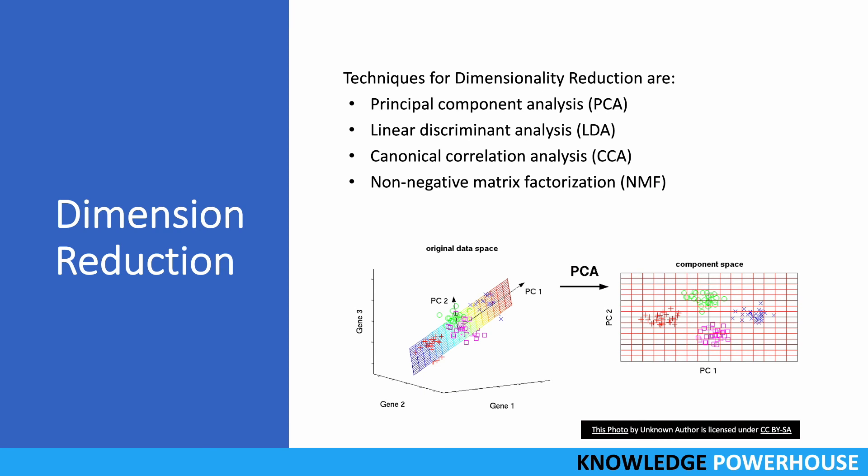There are several techniques for performing dimensionality reduction. These include Principal Component Analysis (PCA), which is very popular, Linear Discriminant Analysis (LDA), Canonical Correlation Analysis (CCA), and Non-negative Matrix Factorization (NMF). We will be covering these topics in more detail in future sessions.